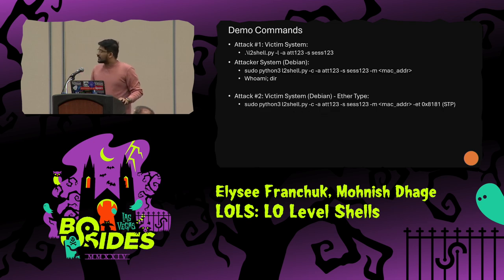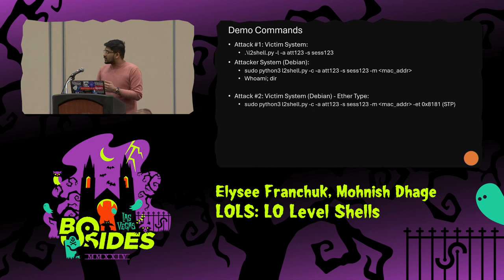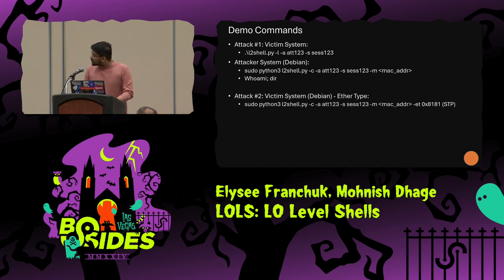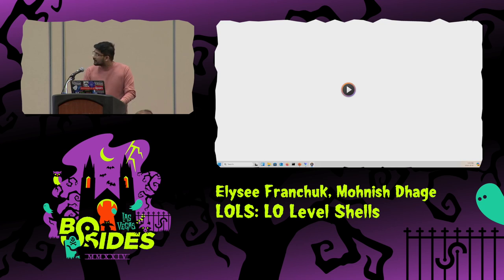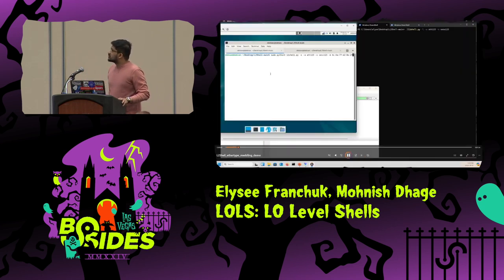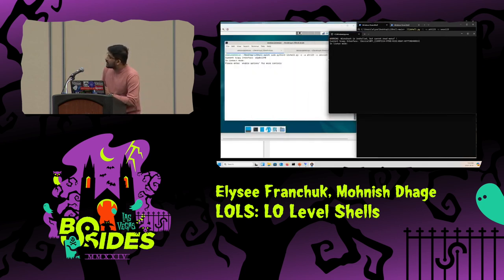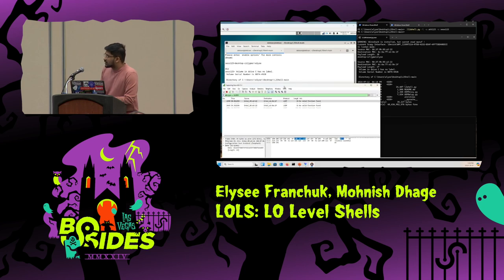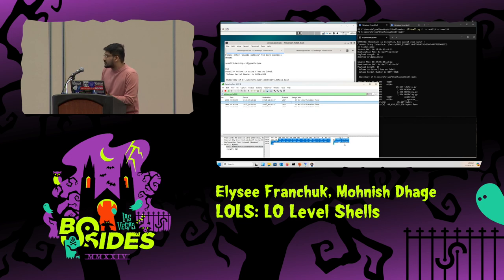Before I jump into the demo, I want to show the commands that we are running. On the victim node, we are running the script in listen mode and setting the attacker and session ID. And on the attacker system, we are running it in connect mode, again setting the same attacker and session ID. Additionally, we are providing the MAC address of the victim machine, and then we'll be running 'whoami' and 'dir' commands. As Elise spoke earlier about Ether types, for the second section we'll be using STP as the Ethernet type — the code for that is 8181. On the right-hand side we have the victim screen using Windows, connected in listen mode, and we're using the Debian machine to connect to the victim. We have Wireshark running in the background. The commands that were sent were using loopback, and the responses that were received were using broadcast messages.